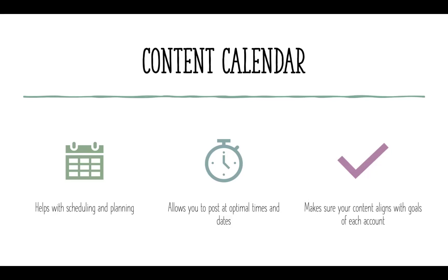Once you have all of this, you want to look at a content calendar and how you're going to roll out the strategy. It helps with scheduling, planning, and your monetary budget. It allows you to post at optimal times and make sure your content is lining up with your goals. If you have a Christmas campaign, you don't want to roll it out in February — that doesn't make sense. Some people would even say October is too early. You have to be aware of what your target audience wants, what they think, and how it's going to influence them.